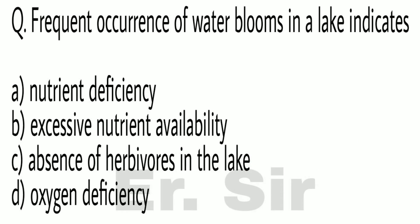Frequent occurrence of water blooms in a lake indicates — (A) Nutrients deficiency, (B) Excessive nutrients availability, (C) Absence of herbivores in the lake, (D) Oxygen deficiency. The correct option is D: Oxygen deficiency.